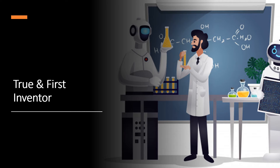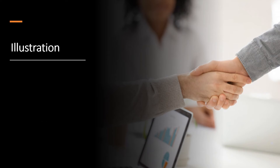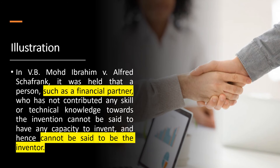Researchers ask this question very often: can a person who is assisting the inventor have their name in the patent application as inventor? A person assisting the inventor with development of invention cannot be termed as inventor as per the Indian Patent Act 1970. In the case of VB Mohamed Ibrahim vs. Alfred Shafranc, it was held that a person such as a financial partner who has not contributed any skill or technical knowledge towards the invention cannot be said to have any capacity to invent and hence cannot be said to be the inventor.